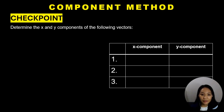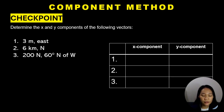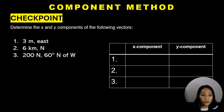To end this part of the discussion, let's have a checkpoint activity. Determine the x and y components of the following vectors: Number 1, 3 meters east. Number 2, 6 kilometers north. And number 3, 200 newtons, 60 degrees north of west.